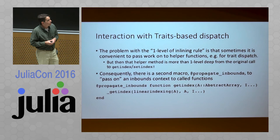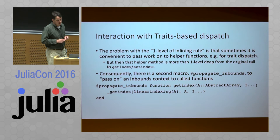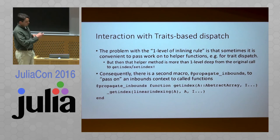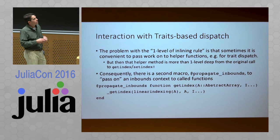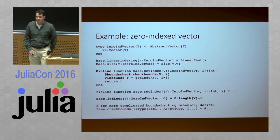We needed an extra mechanism to opt in to passing along an inbounds context through one of these chains. That's why there is the @propagate_inbounds macro, which you can use to mark a function to say it should borrow whatever inbounds context it was called in. The top-level implementer of getindex in base has exactly this kind of structure, dispatching on a trait of the abstract array while wanting to pass along inbounds.